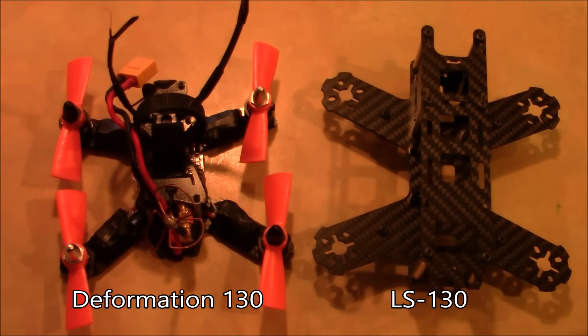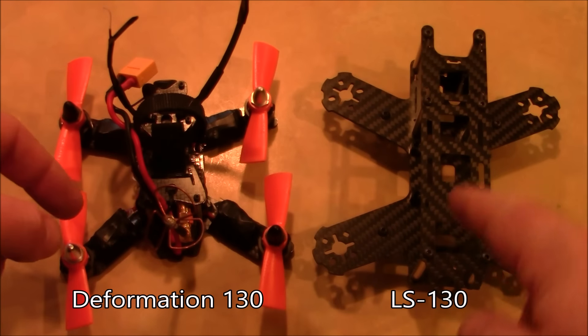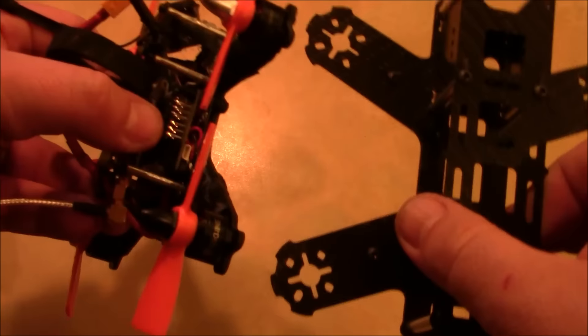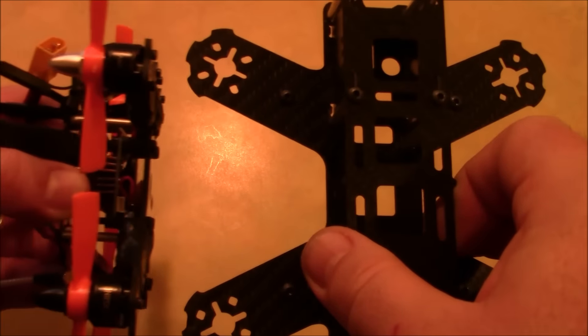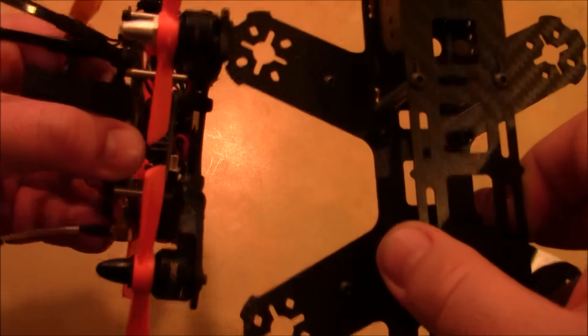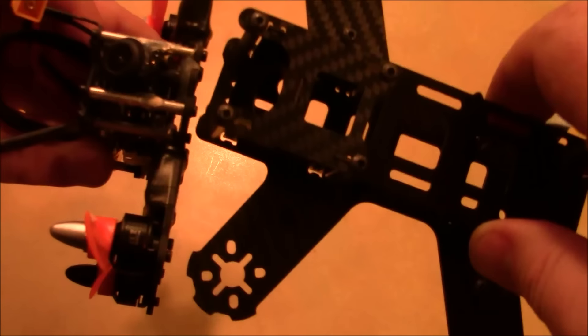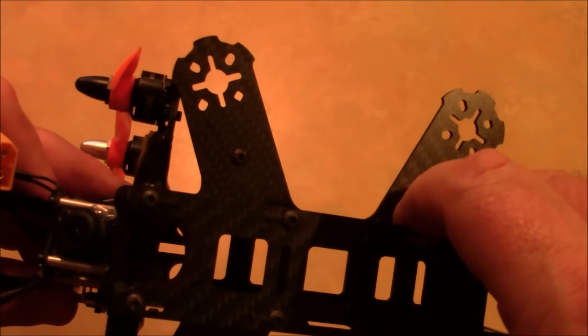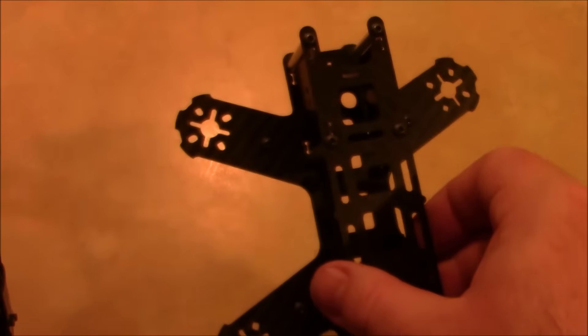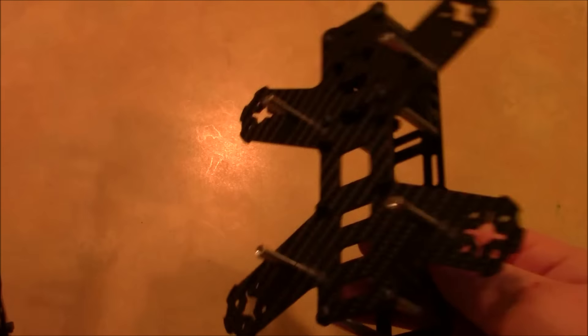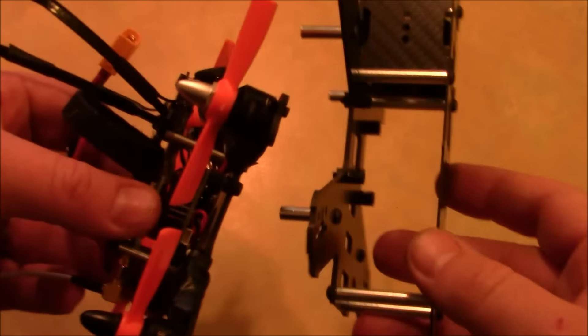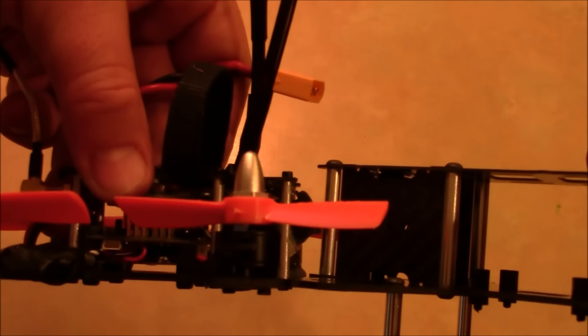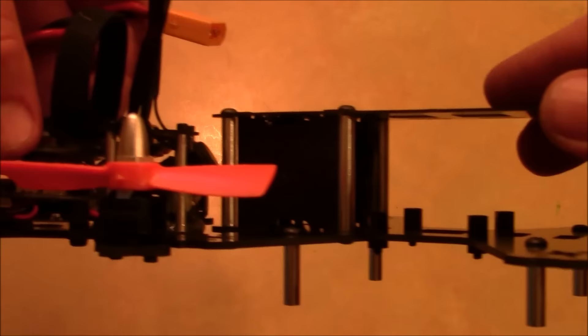So here's the Deformation 130 and the LS 130. And you can tell this one just looks a little bit bigger, has beefier arms, beefier middle plate. But if I hold these up next to each other on the arm distance here, you can see the front to back arm distance is a lot longer on the LS 150 or 130, sorry. And the left to right is a little bit wider as well. But that's because this thing weighs, measures in at 145 or 147, whatever it was I said. Also, you can see here on the side how much taller the spacers are for this LS 130. They should be about this size. In fact, even when I got this frame, I thought these spacers were kind of tall, but these ones are a lot, are even more tall than the Deformation 130.